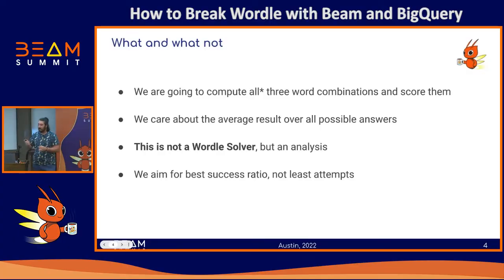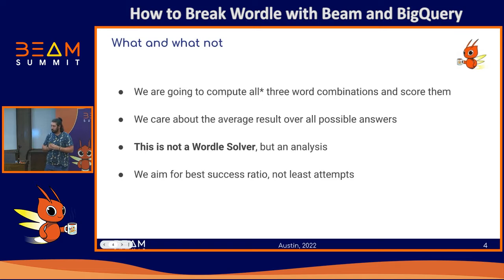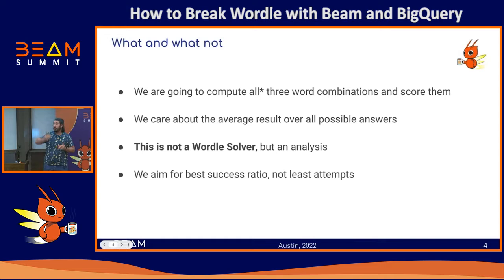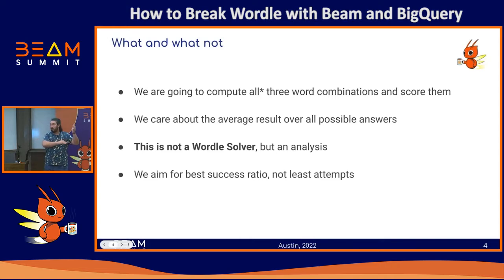The idea here is that I want to compute all the possible combinations of three words and give them a score. I'm going to care about the average result when you loop through all the answers, not how well a given combination does for that particular answer.